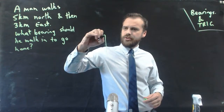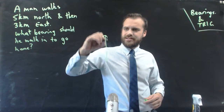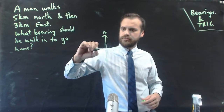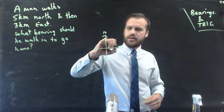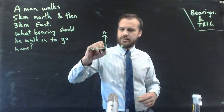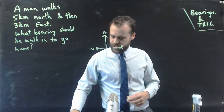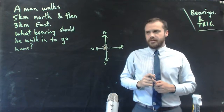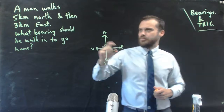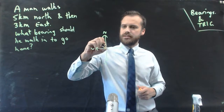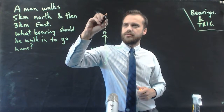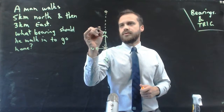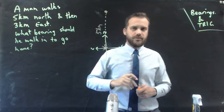A compass rose is a good way to start — north, east, south, west. Here's our man, and he starts here. The first thing he did was walk 5km north.